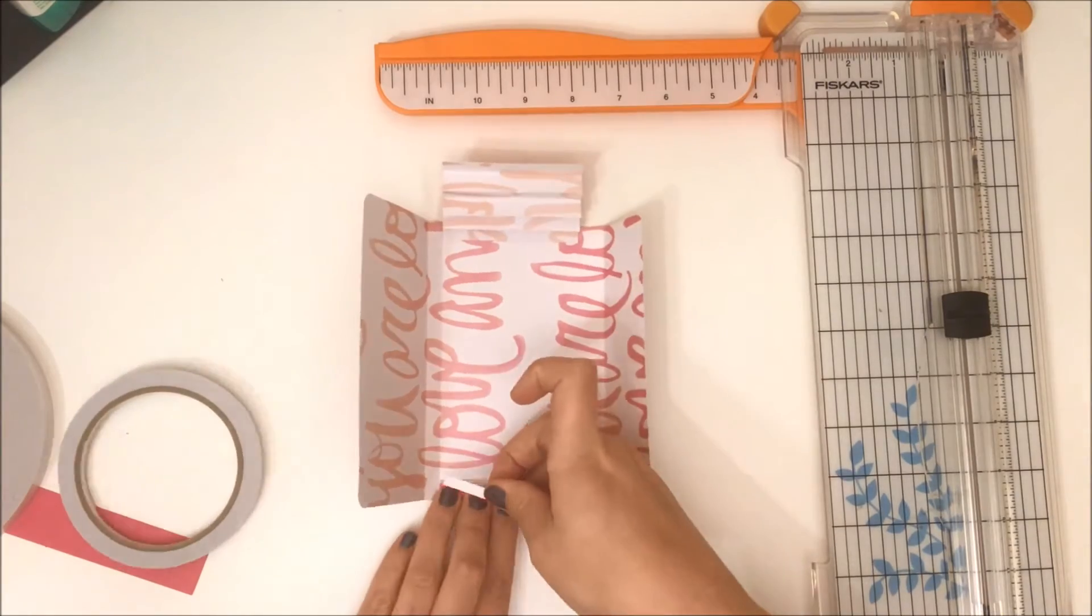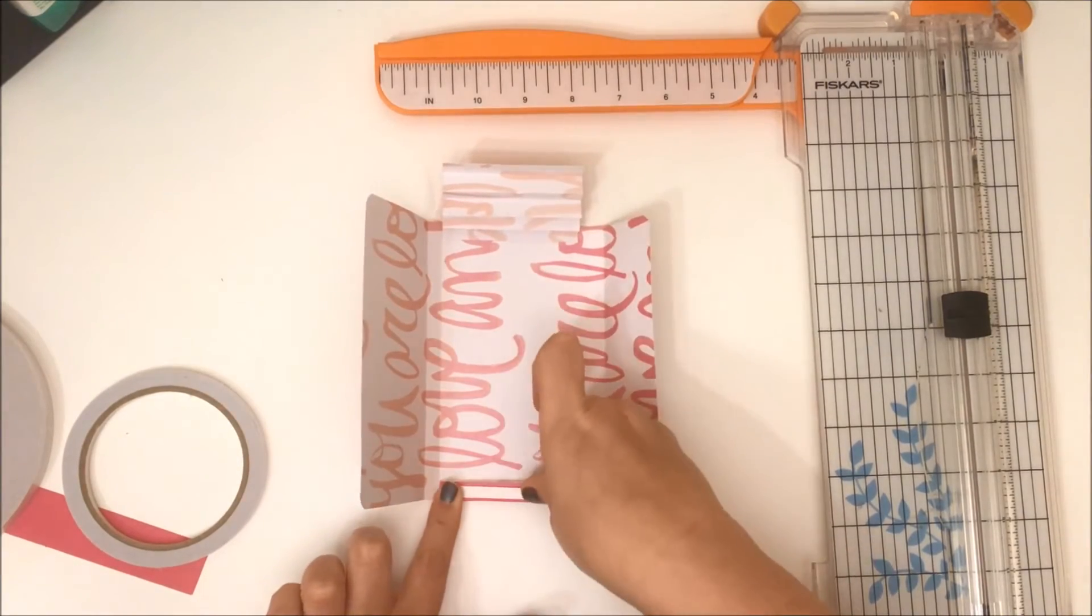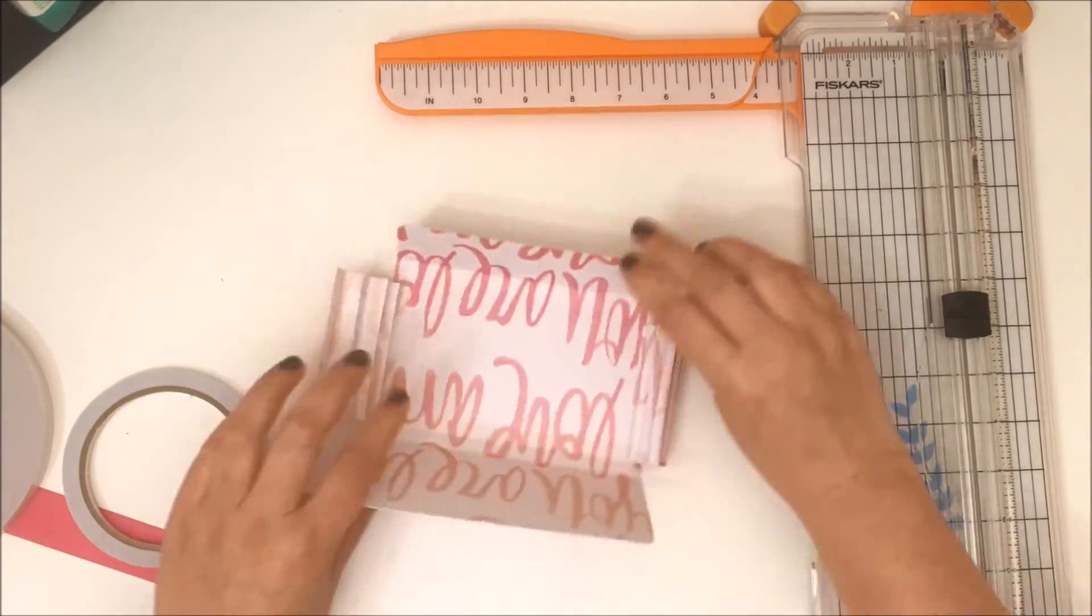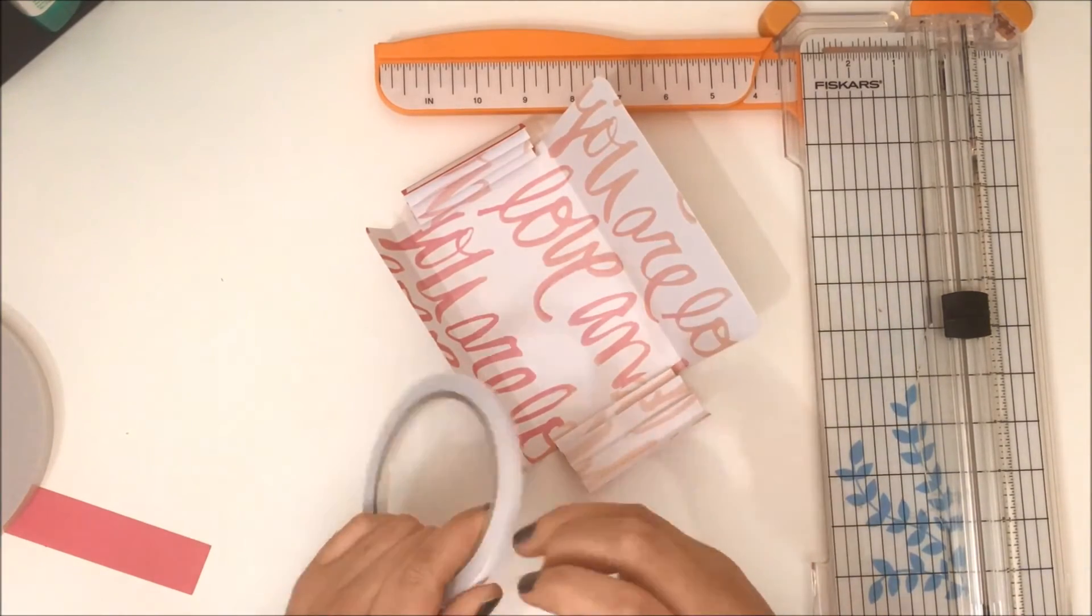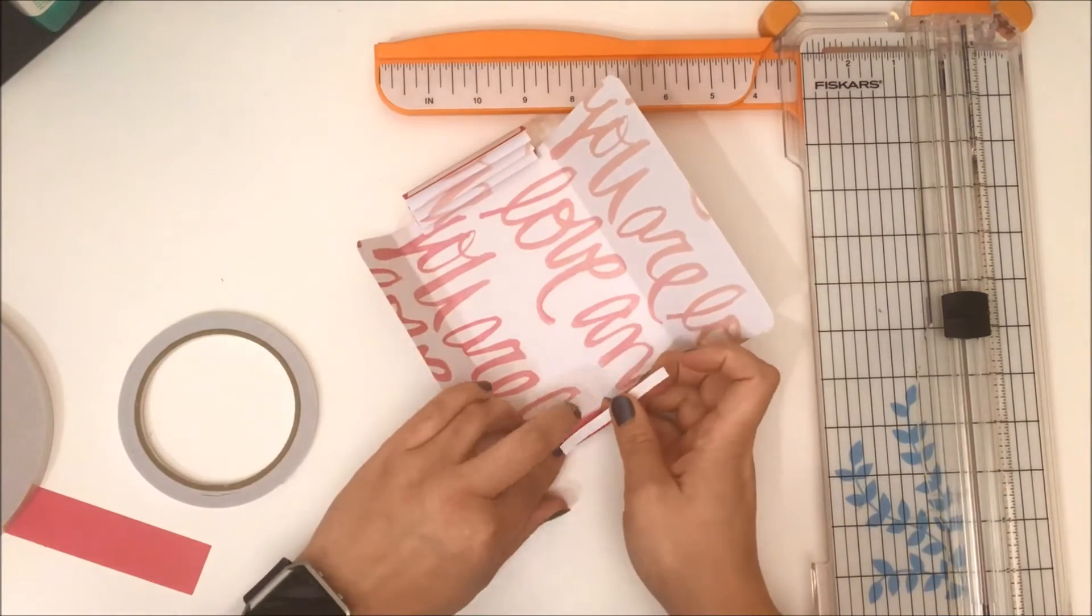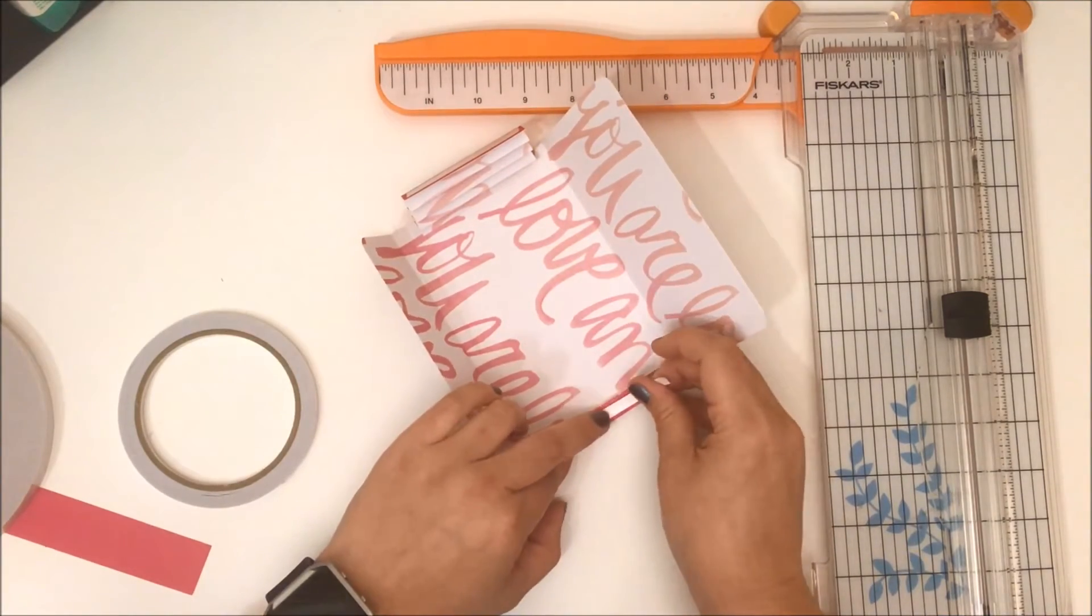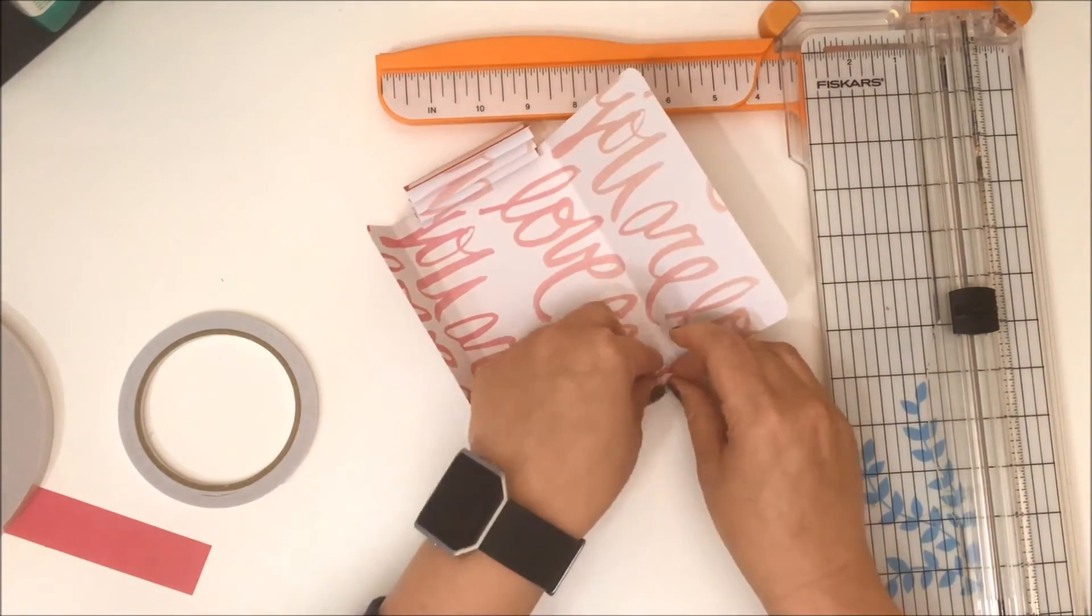I'm just putting the tape now on the top, and then I do one at a time when I'm sticking it down just because it's a little harder to line them both up automatically.